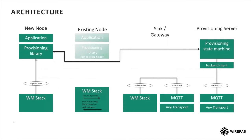Now a bit more about the software architecture on the new node side: we developed a provisioning library that is a set of source files running inside the application to manage all the provisioning parts. On the existing nodes there is also a provisioning library with helper functions to enable and disable joining beacons, but this is totally optional because it can be managed directly from the backend. On the backend side we developed a provisioning server that is built on top of our backend clients.